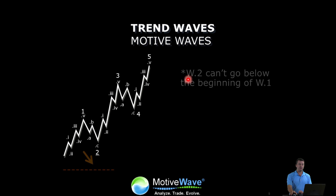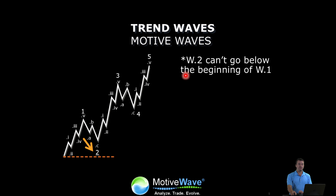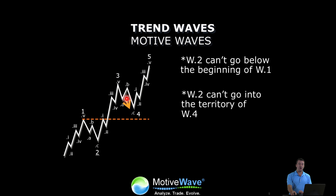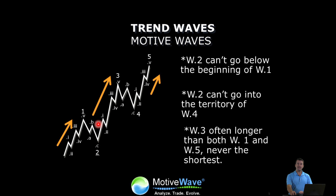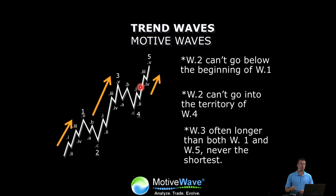Let's get into some of the rules specifically of that five-wave pattern. Number one: your first correction, which is wave two, cannot go below the beginning of wave one. Basically, this correction can't move below the start of the new uptrend, else it's not really an uptrend. The next rule is that wave four can't go into the territory of wave two — the corrections need to be removed from each other. They can't touch. Finally, wave three is not the shortest of the trend waves. Your trend waves are one, three, and five. Wave three must be at least longer than one or five — usually it's the longest, but it can't be the shortest. And that's the key rule you want to keep in mind.